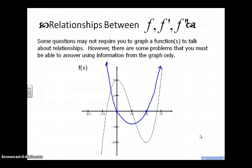We're going to try to draw f double prime from this information. Everything I got about f prime from f, I can get about f double prime from f prime. Where f prime's slopes are negative, the outputs of the second derivative will be negative. Where the first derivative has a horizontal tangent line, the second derivative is going to have a zero. Where the first derivative has positive slopes, the second derivative will have positive outputs. That takes practice — you'll get an idea of what the derivative function should look like.